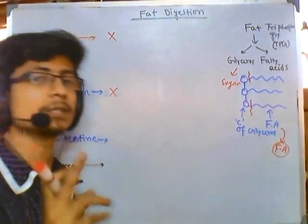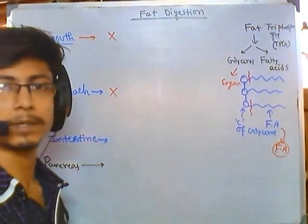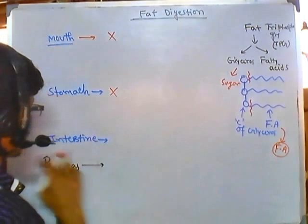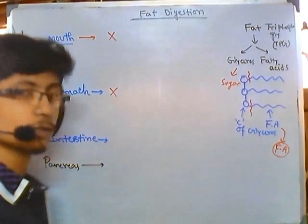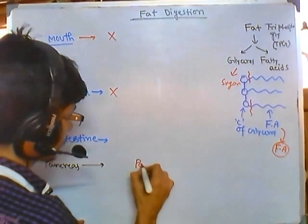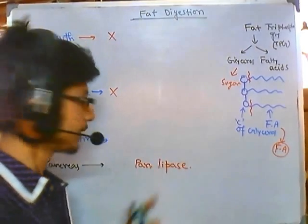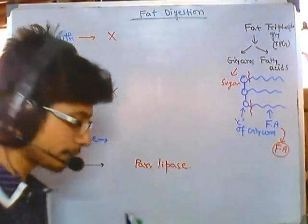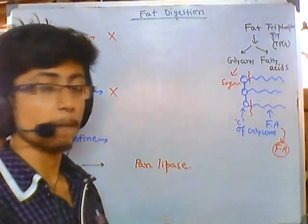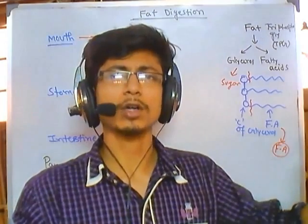The only region where fat digestion can take place is the intestine. If the intestine fails, nothing can help in the digestion of fat. The intestine secretes enzymes to break down fat, and the key enzyme comes from pancreatic secretions — it is called pancreatic lipase. Pancreatic lipase is a lipid-breaking enzyme that can break down fat into smaller fragments.